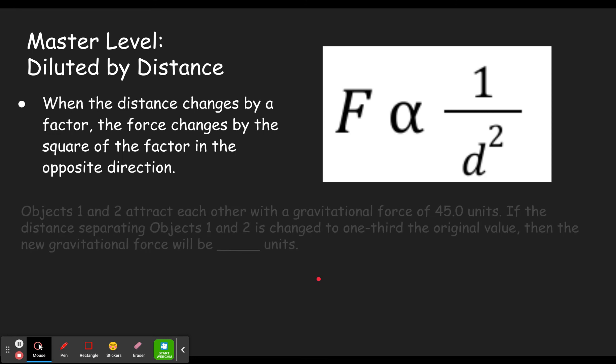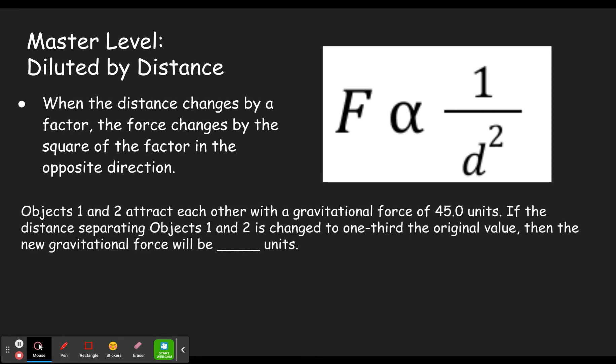All right, so objects one and two attract each other with a gravitational force of 45 units. So again we'll go ahead and use newtons, of course there are other units of force but that's the one we commonly use. If the distance, and that's key, distance separating objects one and two is changed to one third of the original value then the new gravitational force will be blank units or blank newtons in this case.